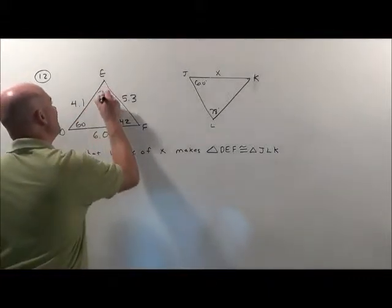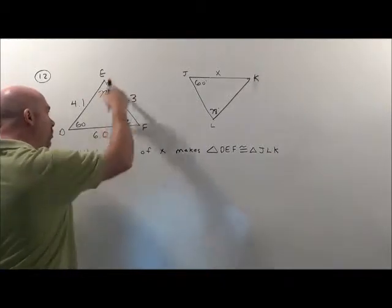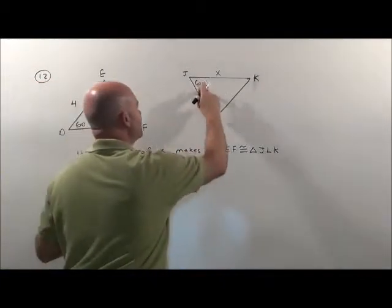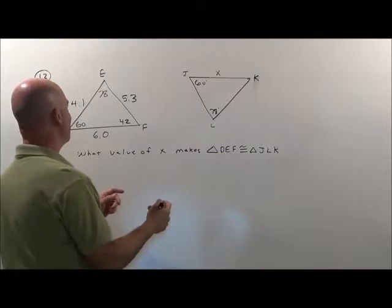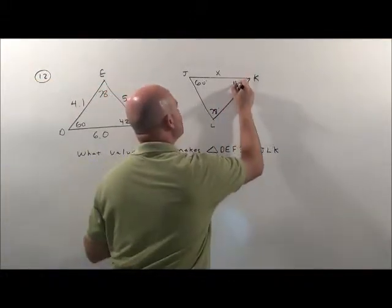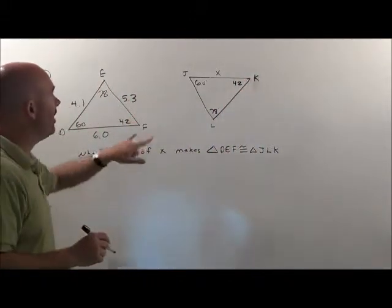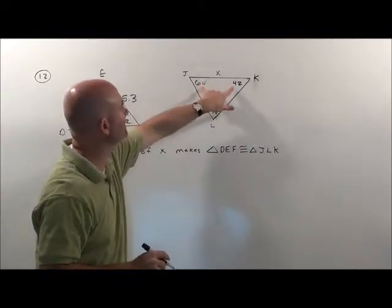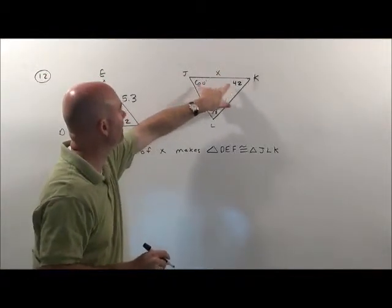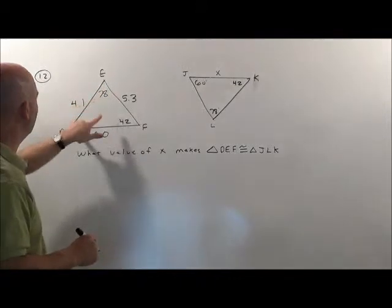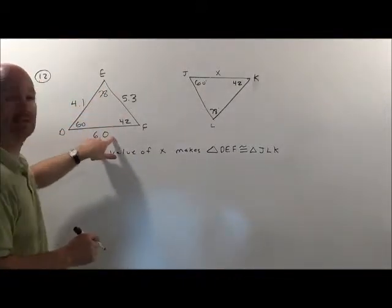102 plus 78 would add up to 180. And over here 60 and 78 adds up to 138. So that would be 42 right there. Now notice the x is between the 60 and the 42 side. So who's between the 60 and 42 side? That would be 6.